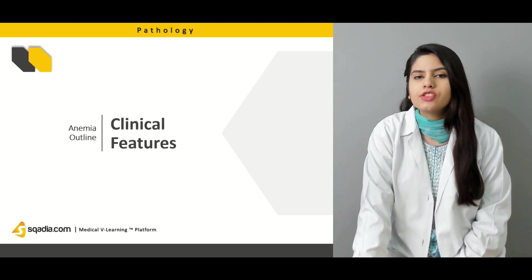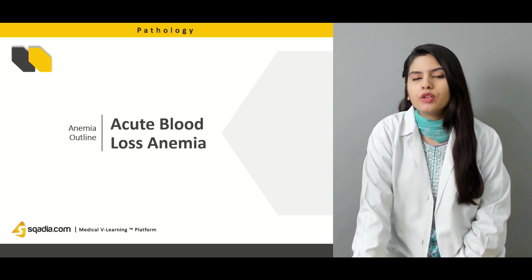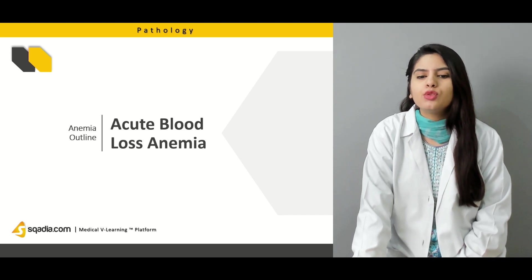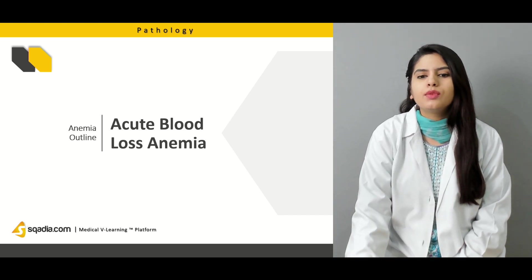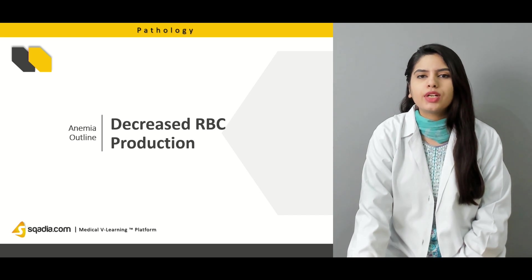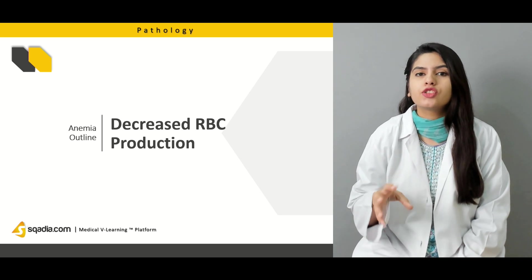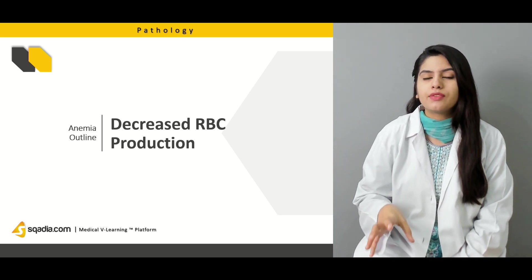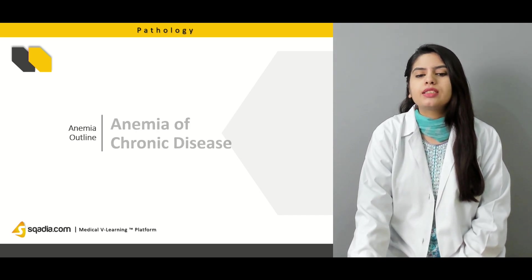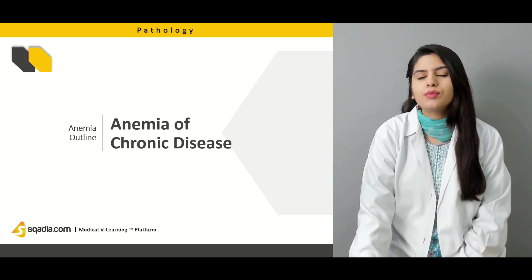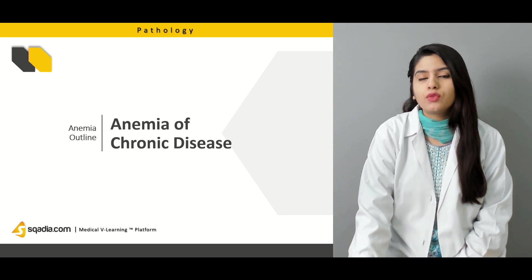Then we will study about the clinical features — some general clinical features of anemia. Talking more about the types of anemia, we will discuss the acute blood loss anemia, which can be due to any kind of acute blood loss. Then we will discuss about the decreased blood cell production anemia, where the cause is actually in the production of the red blood cells. That can be due to iron deficiency anemia. We will also discuss about the anemia of chronic disease, how it progresses, what is its pathogenesis, and how it appears morphologically.